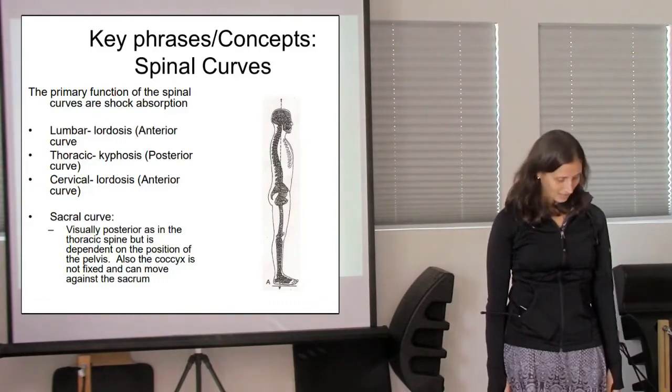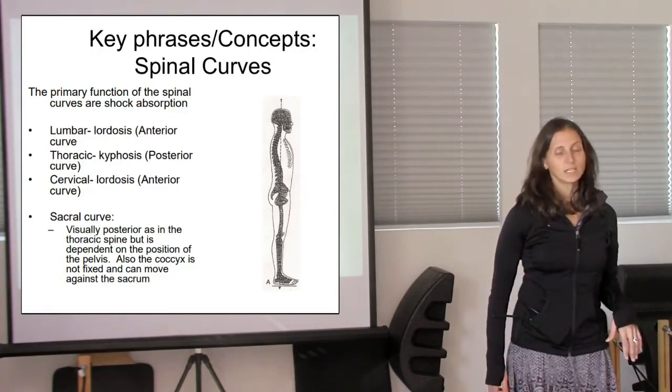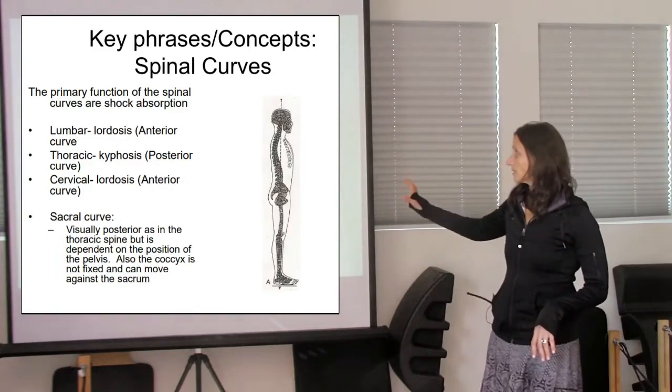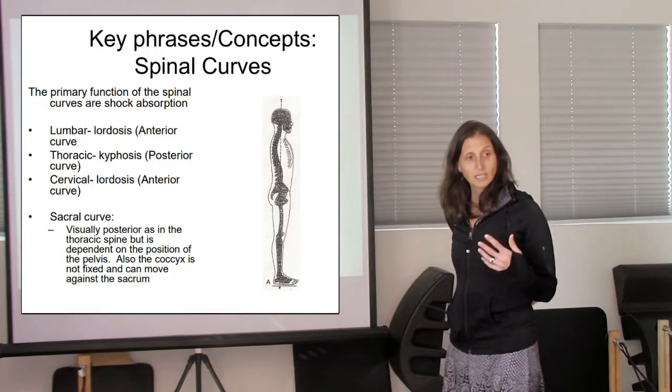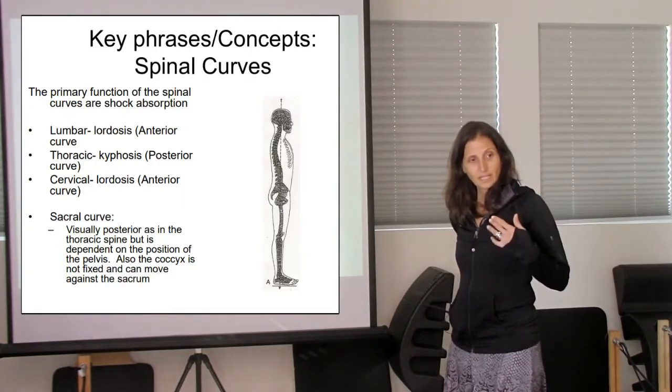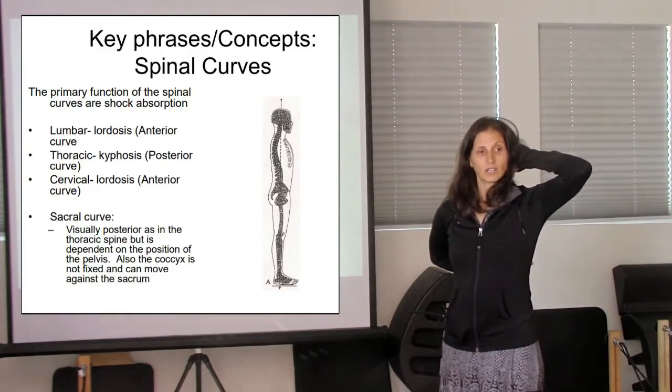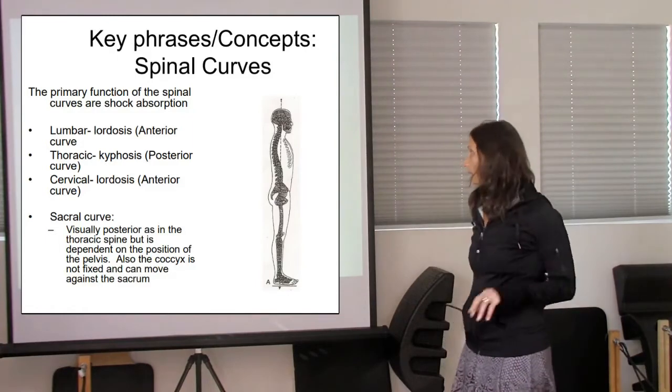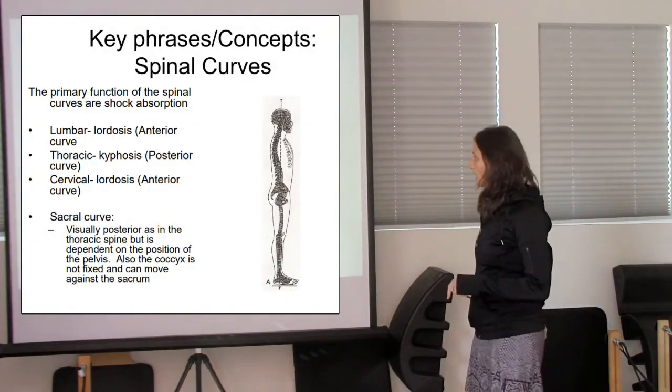This tucked body position. So we do want our curves. We have the lumbar is lordotic, right? The thoracic curve is kyphotic, and then the cervical curve is lordosis again, exactly.